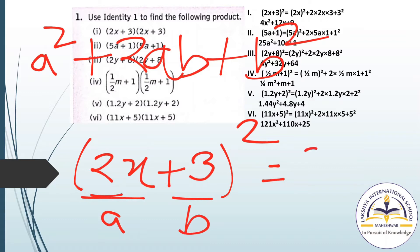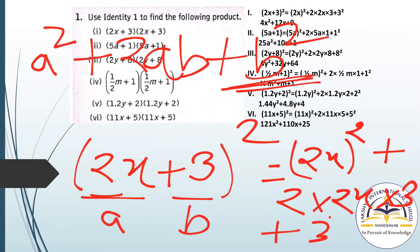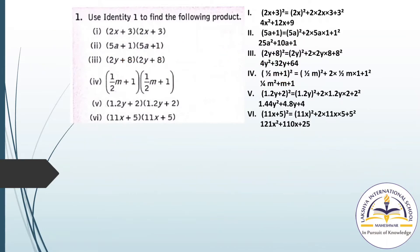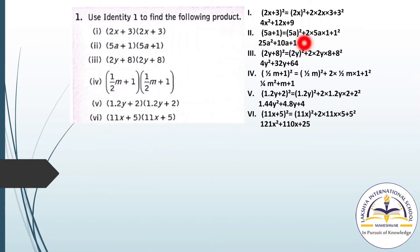Applying the identity: (2X)² plus 2 into 2X into 3 plus 3 square. Solving: (2X)² gives 4X square. Then 2 into 2X into 3 gives 12X. And 3 square is 9. So the answer is 4X square plus 12X plus 9.